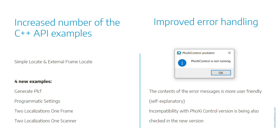The next improvement is error handling. Every application encounters errors when certain prerequisites are not met — for example, when you start localization without providing a CAD file in the API. Therefore, we focused on more robust error handling, especially for problems related to file loading and communication with Foxy devices. You will get notified about experienced problems in a very clear and understandable way.